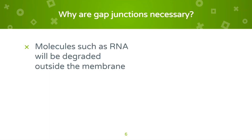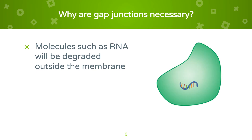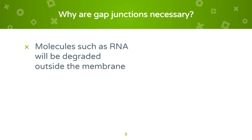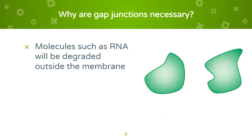Gap junctions transport molecules such as RNA. Outside of the cell membrane, there are enzymes that will degrade the RNA. Here we see RNase, an enzyme, breaking down the RNA. A gap junction is needed in order for the molecules to be transported without being degraded.